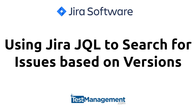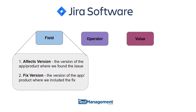Using Jira JQL to search for issues based on versions. In Jira, we have the concept of sprints and versions. Usually we'll have two version fields: the affects version, that's the version of the app or product where we found the issue, and the fixed version, the version where we included the fix for the issue.